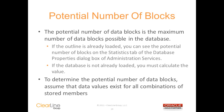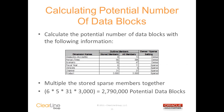The potential number of data blocks is the maximum number of blocks that is possible in the database. This value assumes that every block is created for all the stored member combinations. There's another simple calculation for figuring out the potential number of data blocks. You just need to multiply the stored sparse members together. In this example, you would just multiply the 6 years by the 5 versions, 31 channels, and 3,000 products to come up with 2,790,000 potential data blocks.